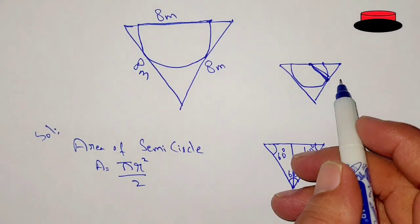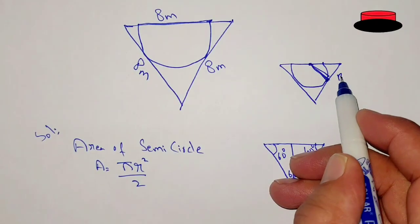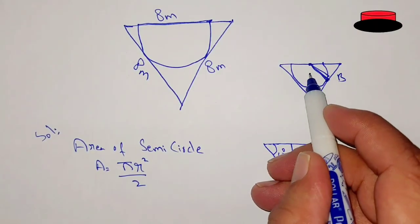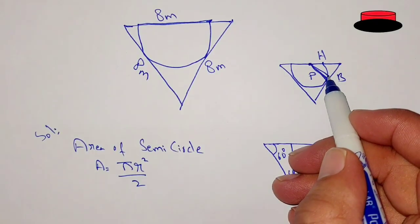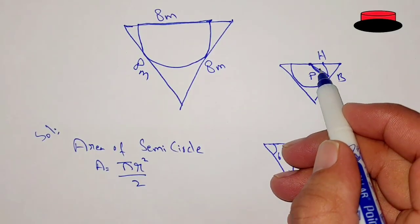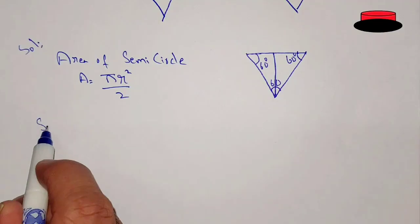This is the right angle triangle. And now, this is the base. This is the perpendicular. And this is the biggest side, hypotenuse. This is 90 degree, 60 degree and this is 30 degree.